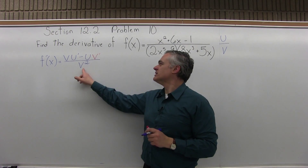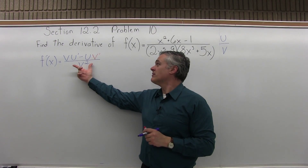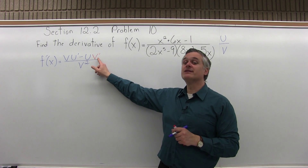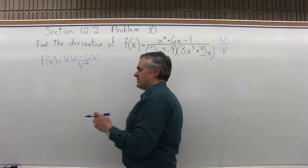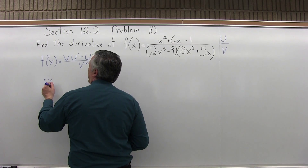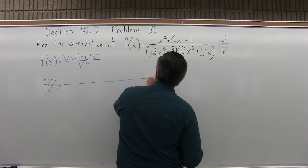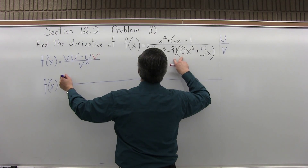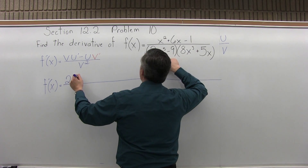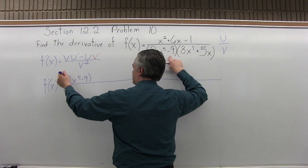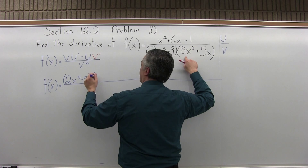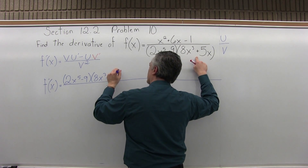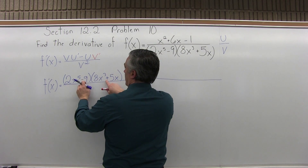This is a quotient. The top of the quotient is typically represented with a u, and the bottom is represented with a v. The quotient rule is f prime of x equals v u prime minus u v prime — I'm going to draw that in red — and the denominator of the quotient rule is v squared. So we're going to fill in v u prime minus u v prime over v squared, where the v prime will require a little extra work, so it's written in a different color to stand out.